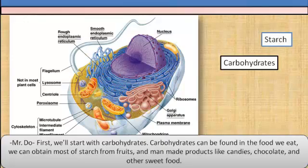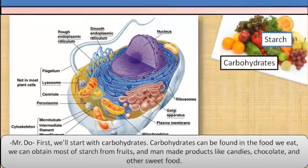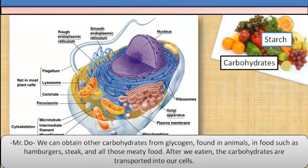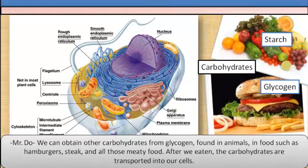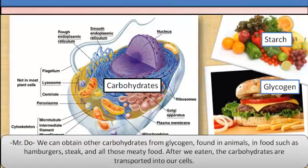Carbohydrates can be found in the food we eat. We can obtain most of the starch from fruits and manmade products like candies, chocolate, and other sweet food. We can obtain other carbohydrates from glycogen found in animals, in foods such as hamburgers, steaks, and all those meaty foods. After we've eaten, the carbohydrates are transported into our cells.